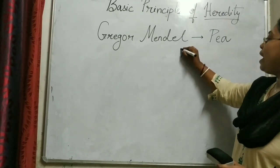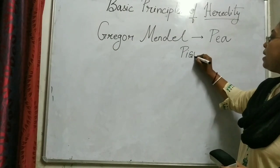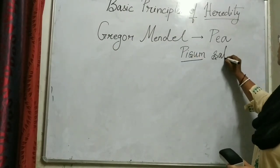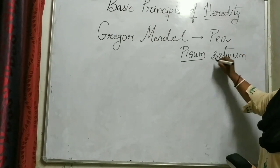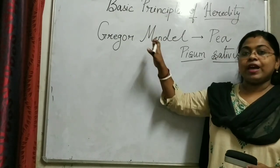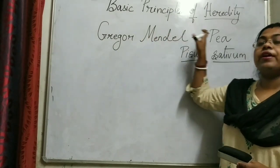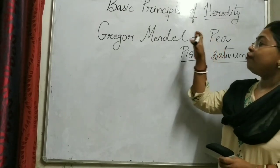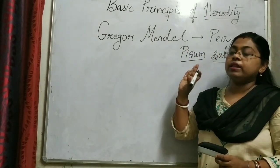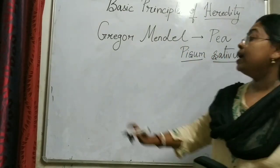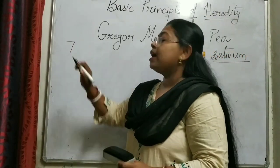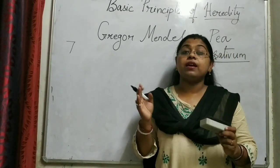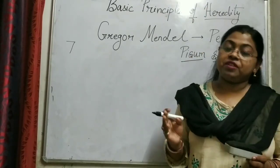The pea plant is known as Pisum sativum. Now we have the father of genetics and his experimental model, which is a plant. When he studied this plant, he found 7 characters and all these 7 characters were contrasting — contrasting means they are just opposite of each other.